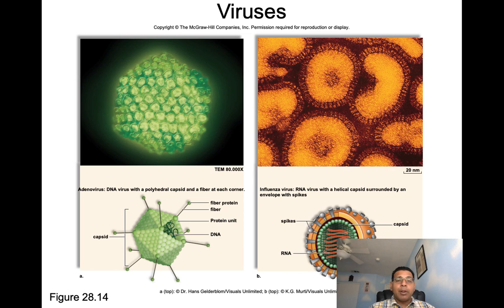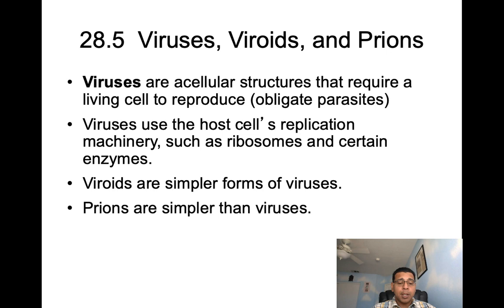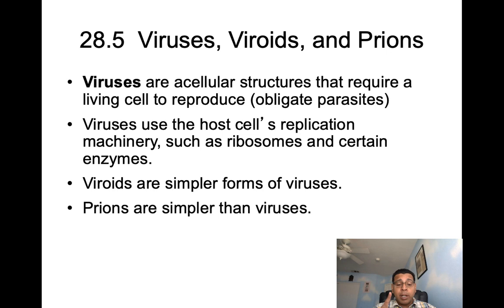Viroids and prions are acellular pathogens. Viroid replication causes diseases in plants, which are the only known host. The mechanisms of diseases like potato spindle tuber and apple scar skin are not that well known. Prions are proteinaceous infectious particles that cause degenerative diseases of the nervous system in humans and other animals — mad cow disease being one example.